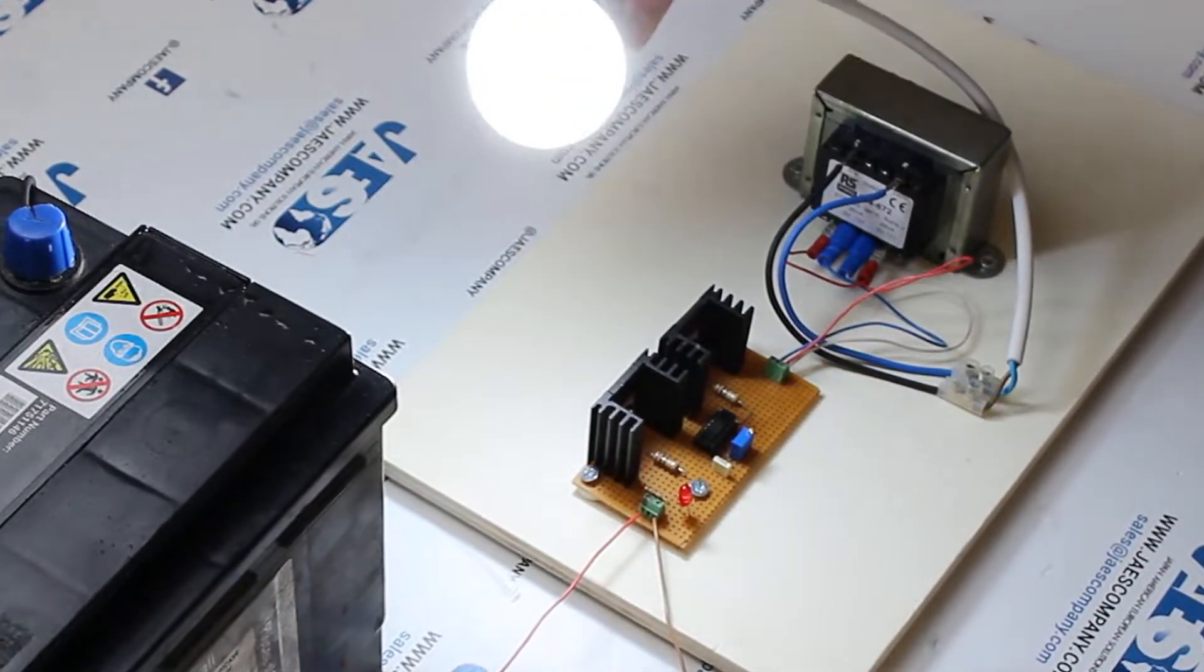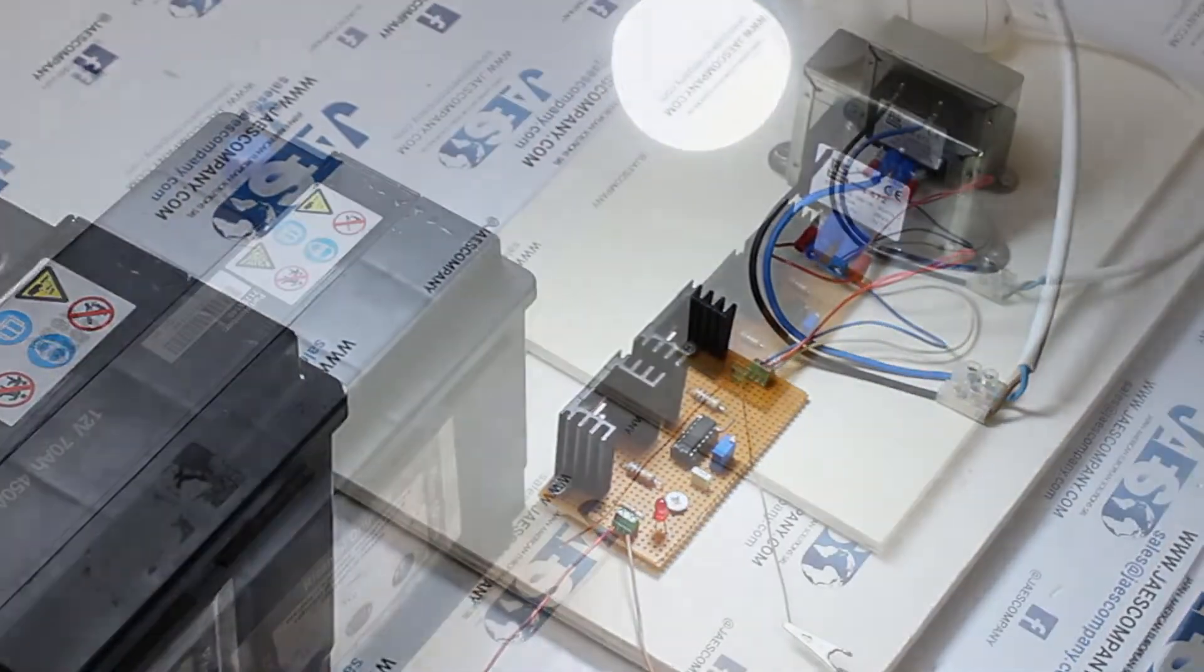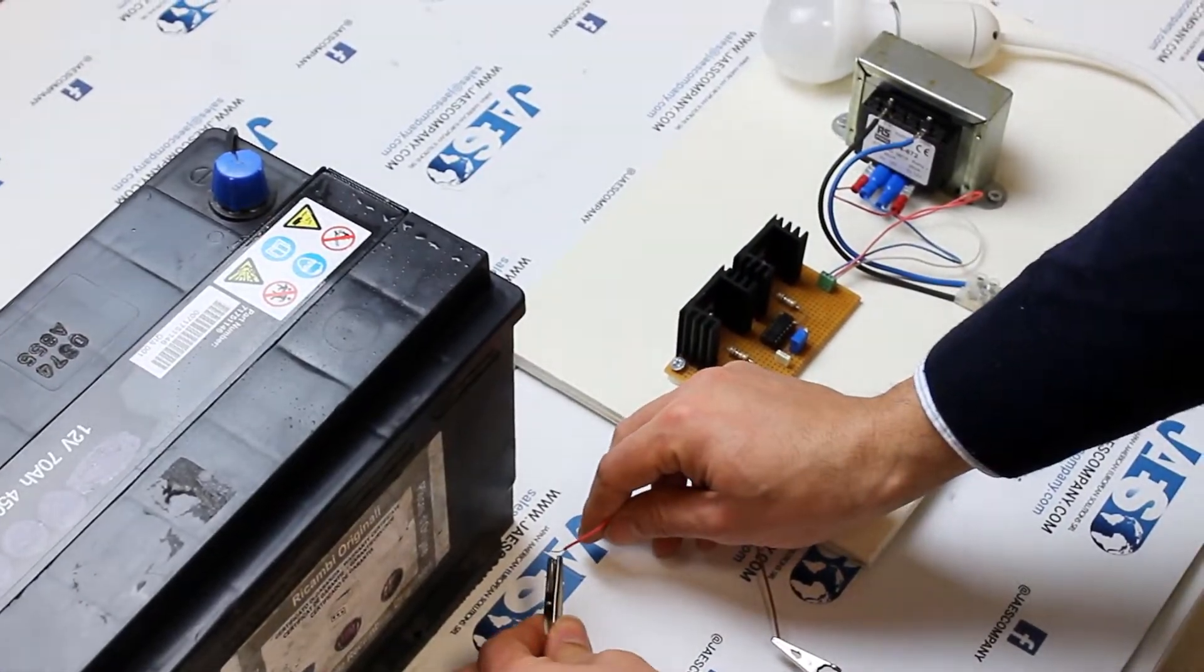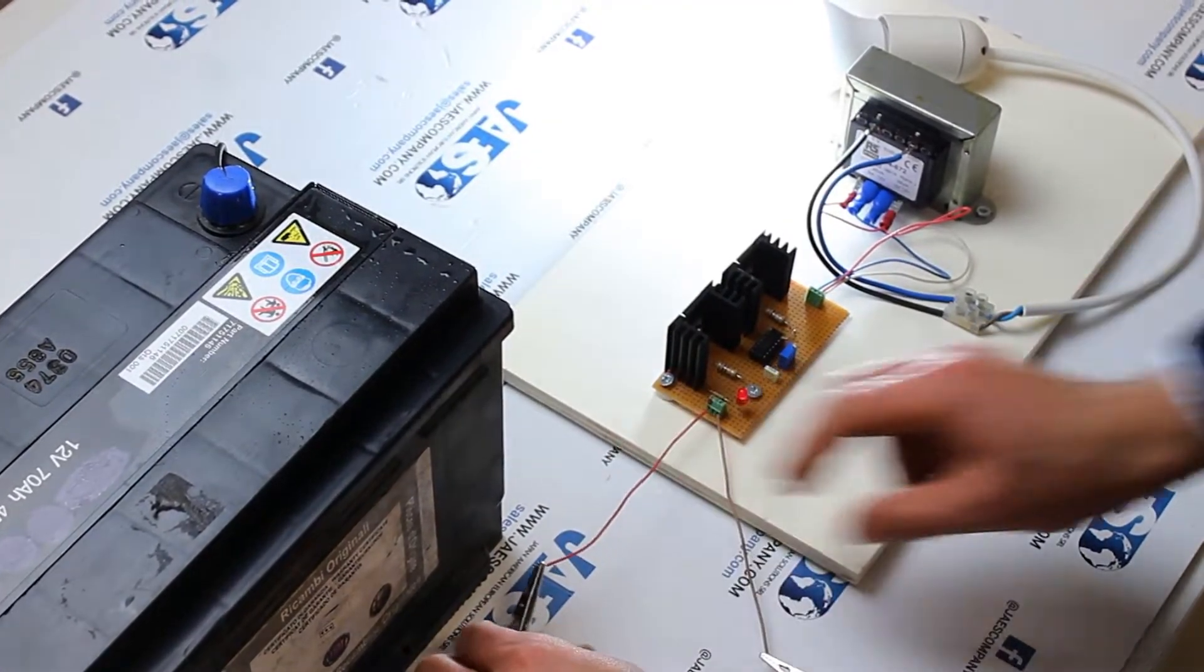Is it possible to power a common light bulb that uses AC voltage using a common battery that instead supplies DC voltage?